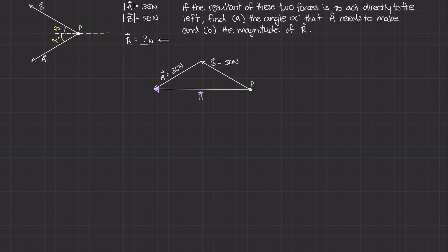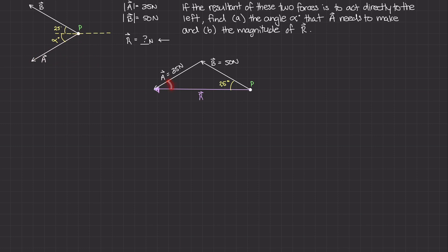Looking back at the original diagram, the angle that B makes with the horizontal is 25 degrees, so this angle in the triangle is 25 degrees. For angle alpha — alpha is the angle between A and the horizontal, so this corresponding angle in the triangle is also alpha. The angle that these two vectors make when added together I'll call beta, and we'll use beta later to solve for the magnitude of R. But let's do part A first: we need to figure out what this alpha angle is.